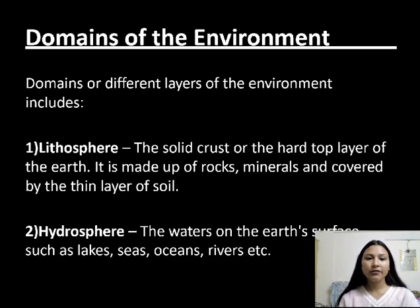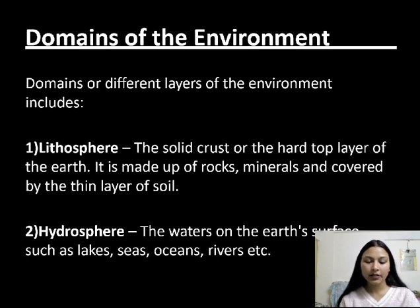Now I will tell you in detail about the domains of environment. The domains or different layers of the environment include: first, lithosphere — the solid crust or the hard top layer of the earth, made up of rocks, minerals, or covered by a thin layer of soil. After that, hydrosphere — the water on the earth's surface, such as lakes, seas, oceans, rivers, etc.